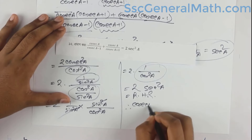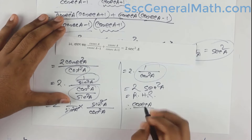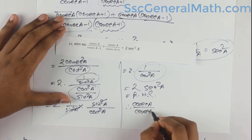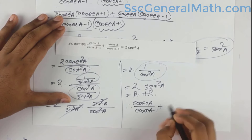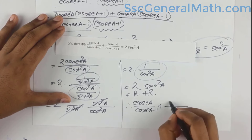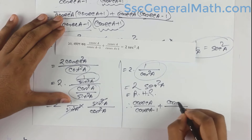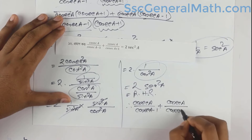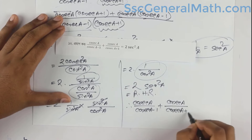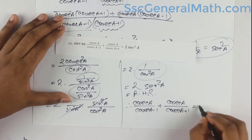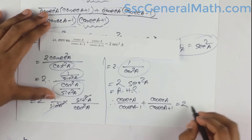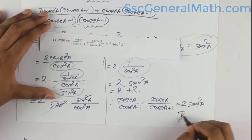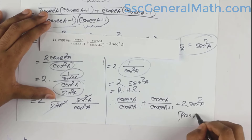To summarize: cosec(a) divided by cosec(a) minus 1, plus cosec(a) divided by cosec(a) plus 1, equals 2 sec squared a. This completes the proof.